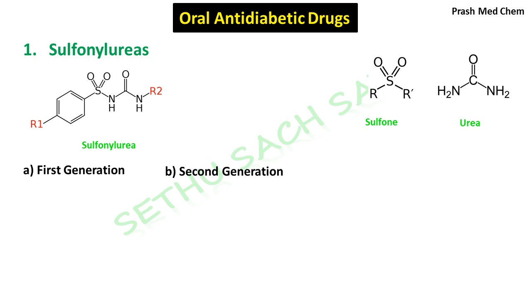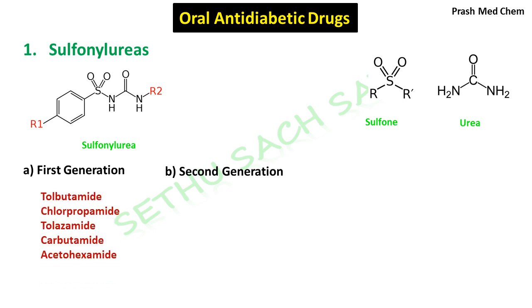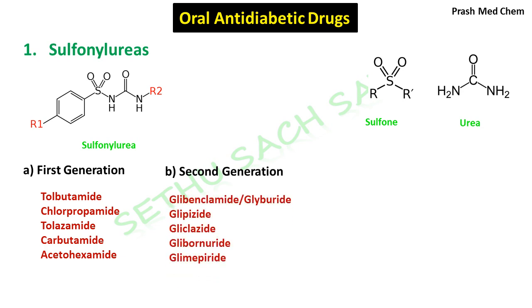Sulfonylureas can be broadly classified into two generations. First generation sulfonylureas — the initial drugs used — include tolbutamide, chlorpropamide, tolazamide, carbutamide, and acetohexamide. Second generation sulfonylureas include glibenclamide (also called glyburide), glipizide, gliclazide, glibornuride, and glimepiride.